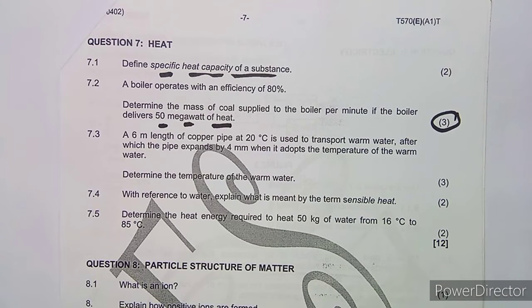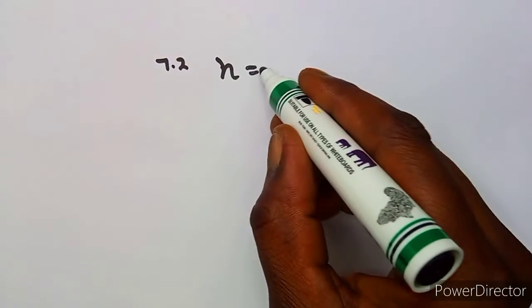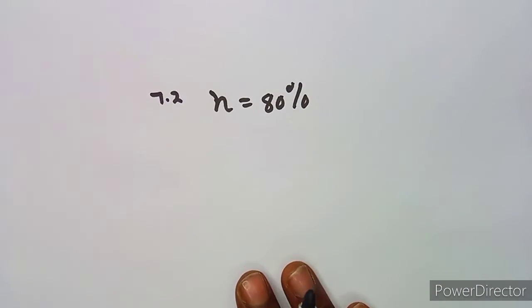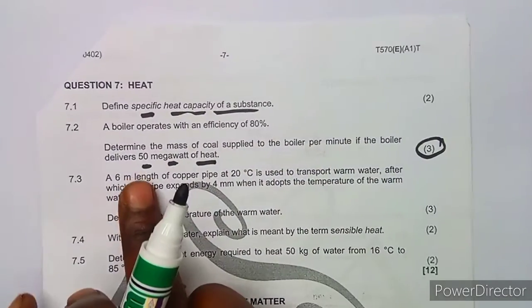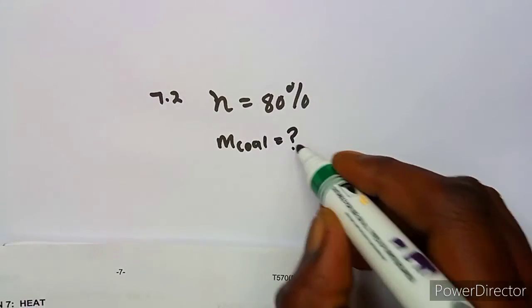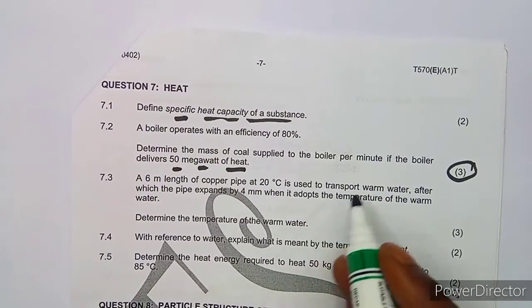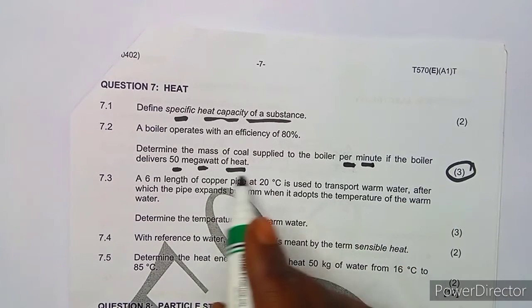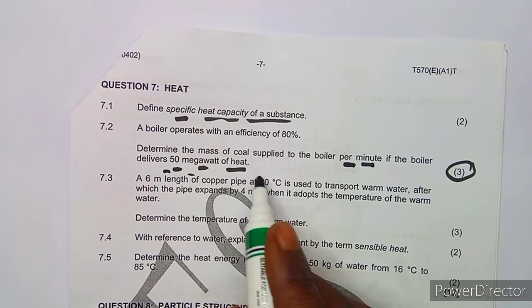Let's list down the information for 7.2. We have the efficiency of the boiler, which is 80% — that's a great efficiency. We need to determine the mass of coal, which is the fuel supplied to the boiler per minute.